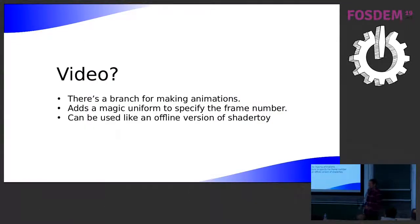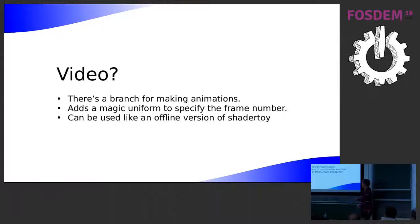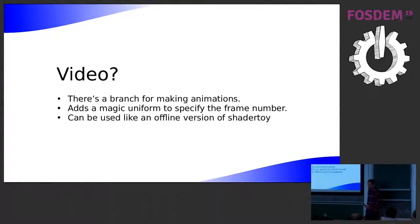There's another branch — this is getting more silly — for making animations. It adds a magic uniform for the frame number, and you can run the test multiple times to generate output into a video via FFmpeg. This was done just for fun, but if you know ShaderToy — a site where you can create demos using WebGL full of little animations — it's quite easy to convert those ShaderToy demos to run on VKRunner to make a sort of crazy offline ShaderToy.